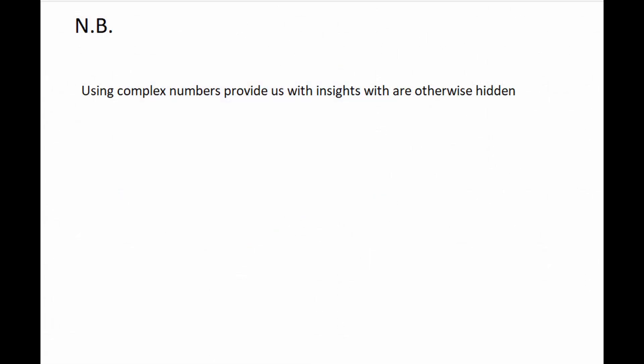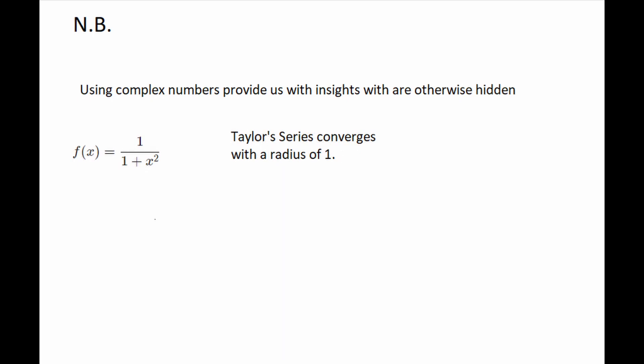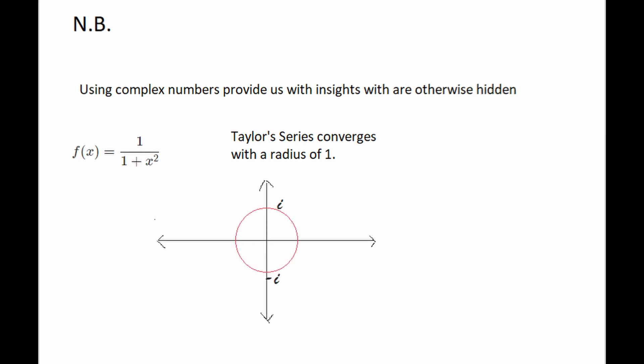Using complex numbers provides us with insights which are otherwise hidden. Let us examine f(x) equals 1/(1 + x²), which is defined and differentiable for all x belonging to R. The Taylor series at x equal to 0 has a radius of convergence of just 1. This is because the function presents with singularities at x equals plus and minus i.